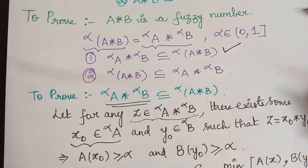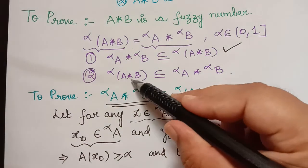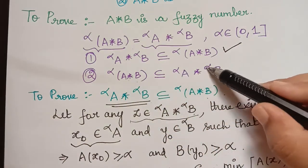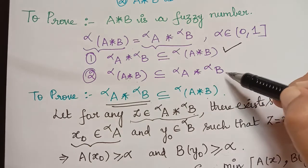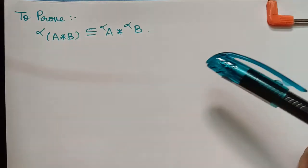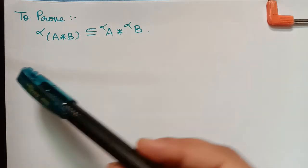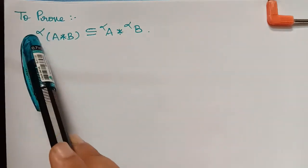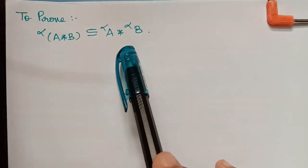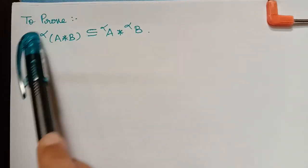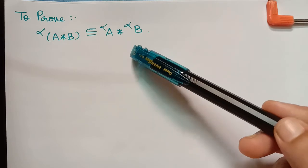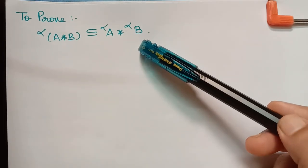We are done with the first part of the proof. Next we have to prove that the alpha-cut of A★B is a subset of the alpha-cut of A starred with the alpha-cut of B. The proof of this second part will be continued in our next video. Thank you.